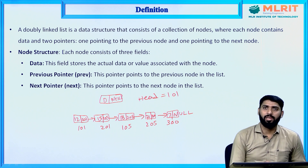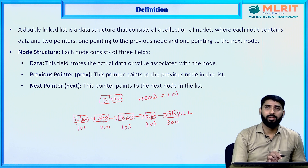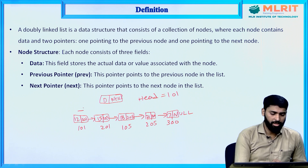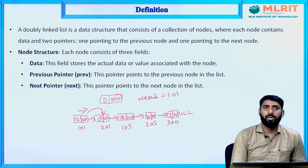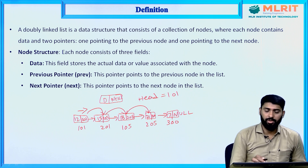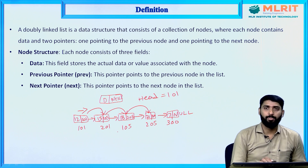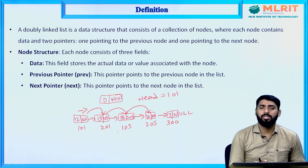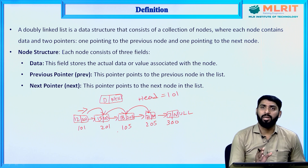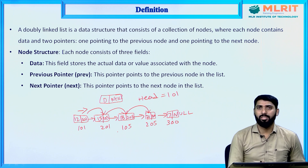If we traverse a single linked list, we start from head. I access element 12, then move to 201 with data 15, then 18, then 21. Now if I want to traverse in reverse order, that is not possible. The disadvantage of single linked list is that reverse traversal is not possible, because each node contains only the next node address — there is no previous node address in single linked list.